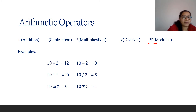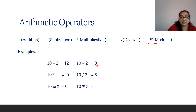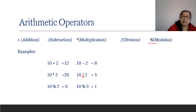I put some examples here. 10 plus 2 — we'll get the answer 12. Then 10 minus 2 — we'll get 8. Then 10 multiplied by 2 — we'll get 20. And 10 divided by 2 — we'll get 5.